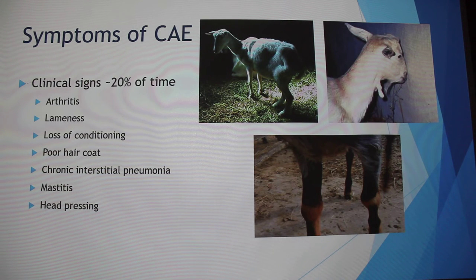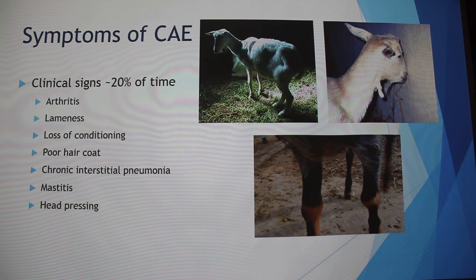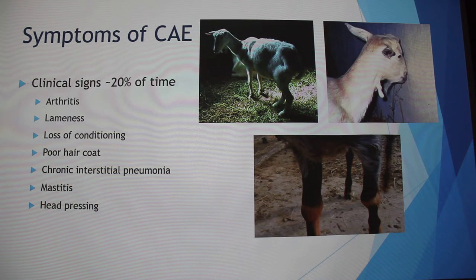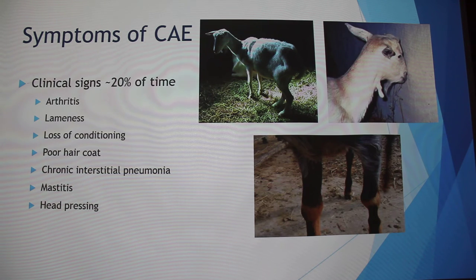Symptoms of CAE — it's an interesting disease because about 80% of cases are asymptomatic, so you may not even know your herd has it. Of the 20% that show clinical signs, arthritis is the big one. They will get swelling and lesions in their knee and joint capsules, along with lameness. There's also an overall loss of conditioning and weight loss. Poor hair coat goes along with that. They can also get chronic interstitial pneumonia, mastitis, and head pressing, which is a symptom of encephalitis. The joints that are swollen — that's not normal.